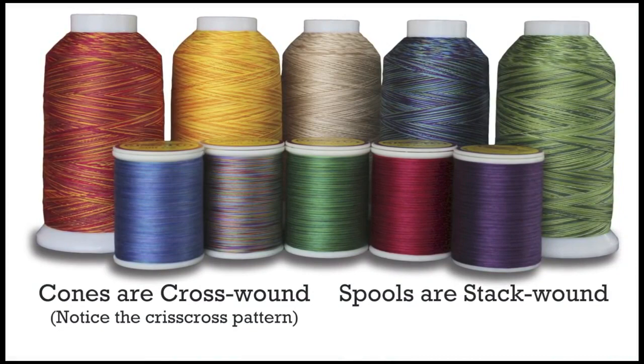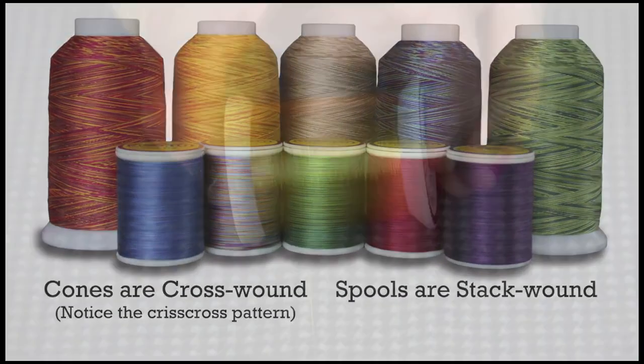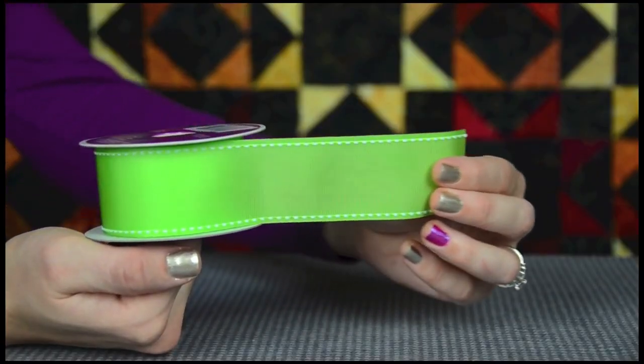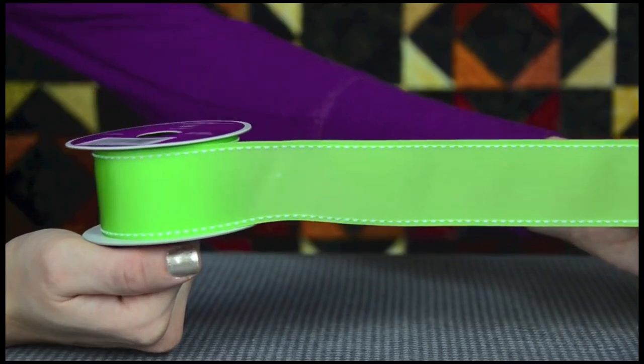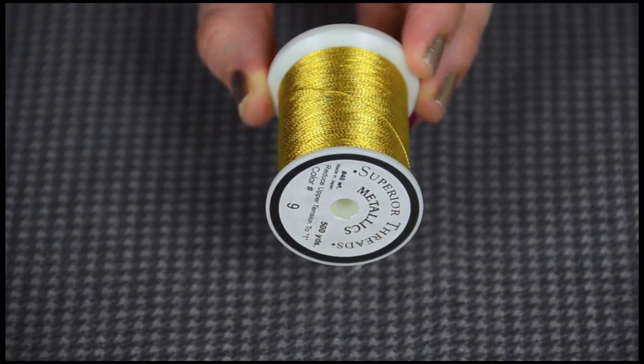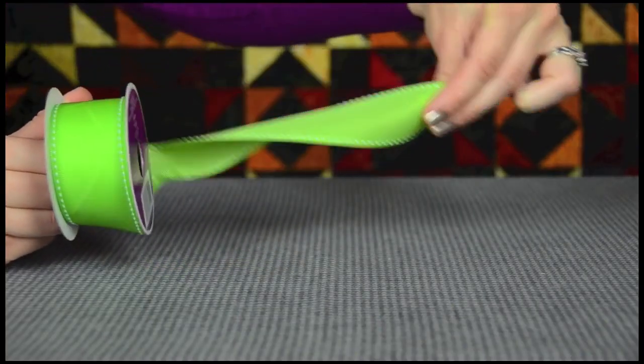A stack wound thread is wound from the bottom to the top and it is meant to come off the spool in the same manner. See from our ribbon example how the thread unwinds, as it should from off the side. When a stack wound spool is unwound end over end, there is extra twist added to the thread with each revolution.